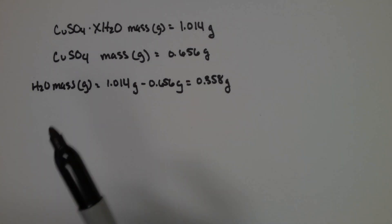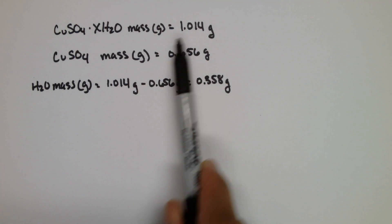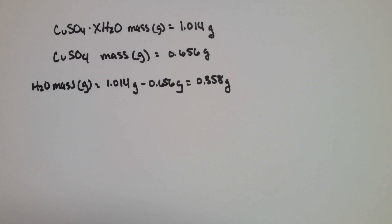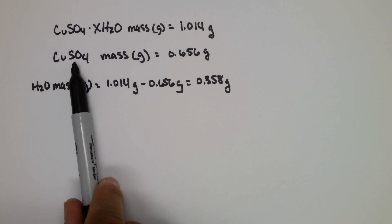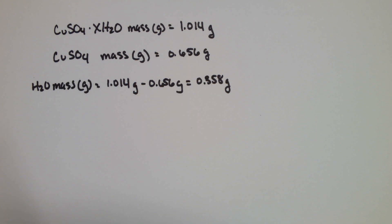So here's some sample data. The original hydrate, I measure a mass of 1.014 grams. The experiment calls for about a gram, so I'm close to a gram there. After evaporation of the water, the copper sulfate remains, and I measure a mass of 0.656 grams. So what's the mass of water?